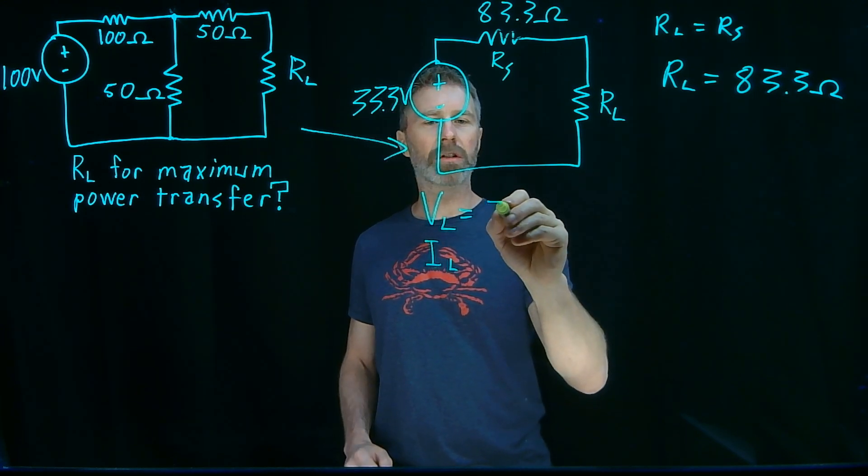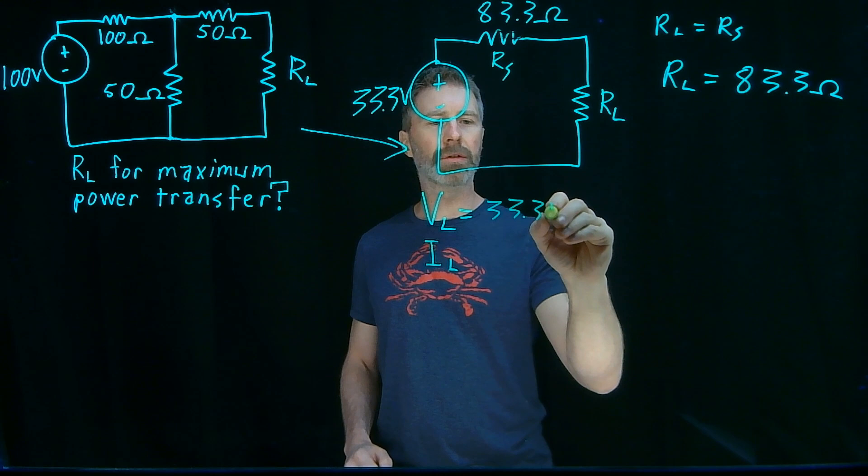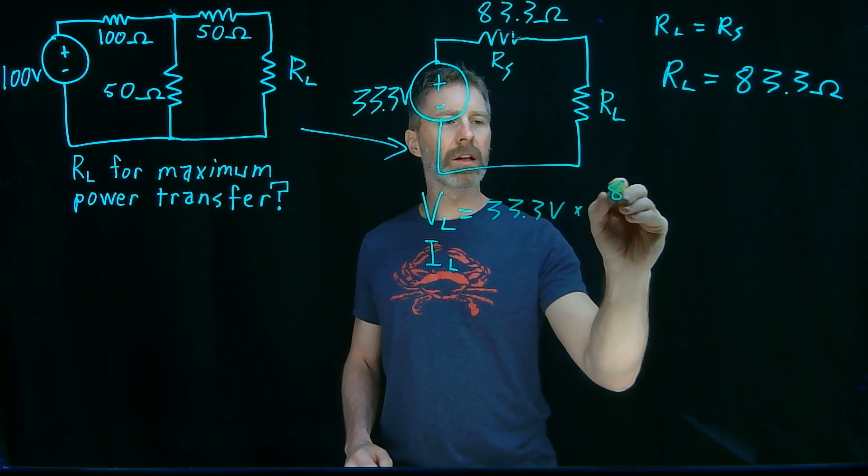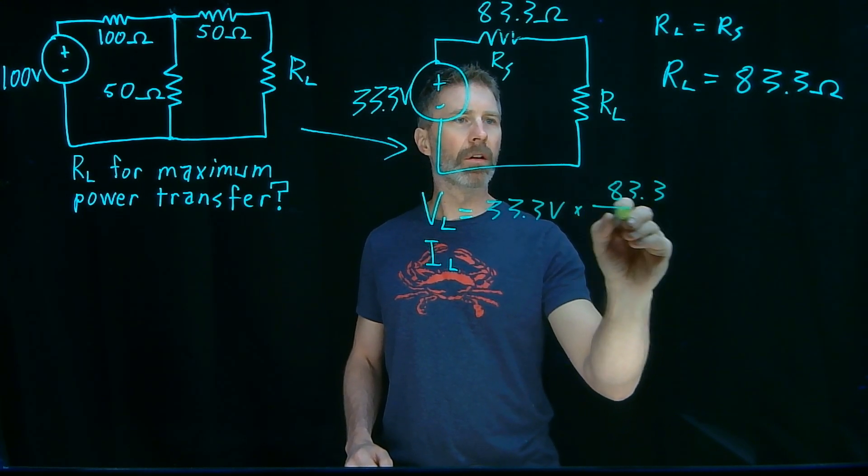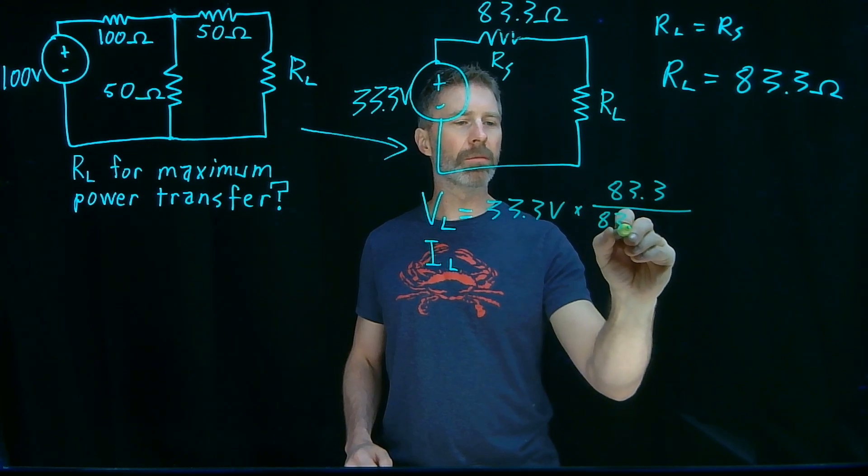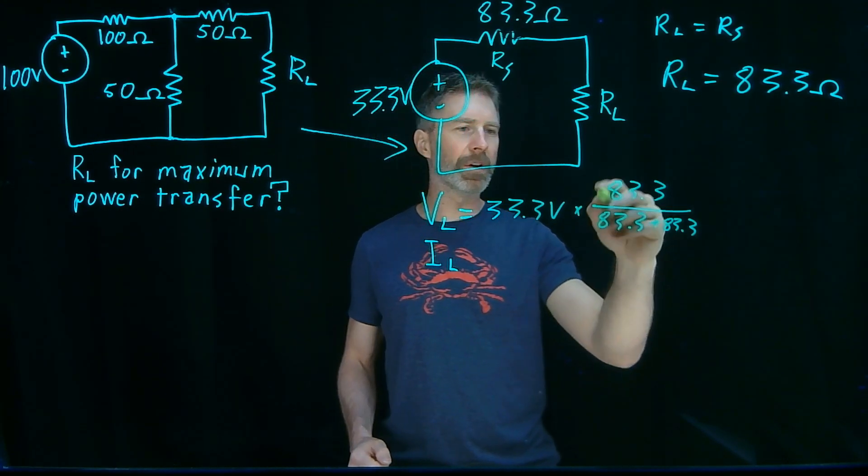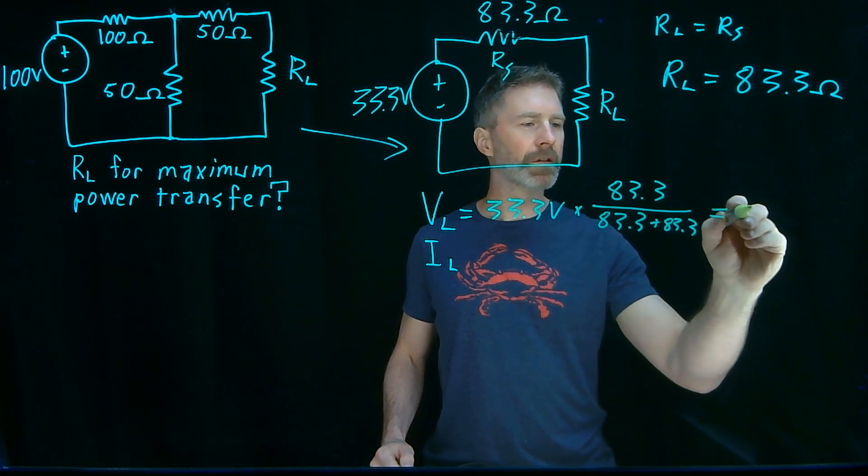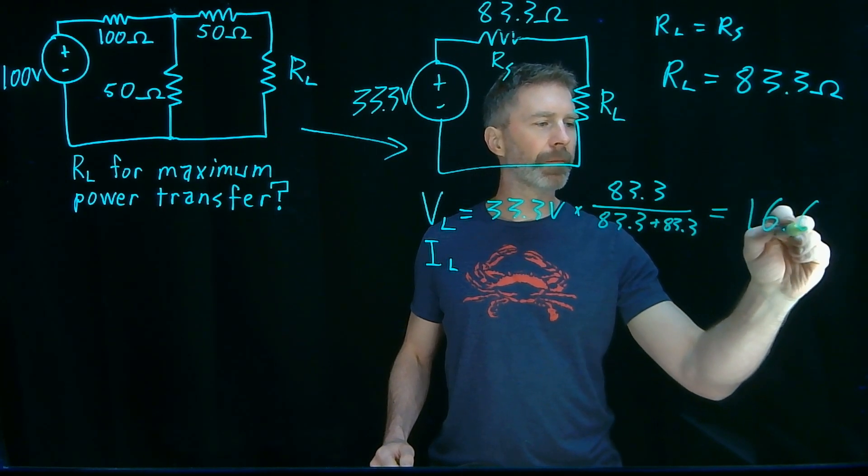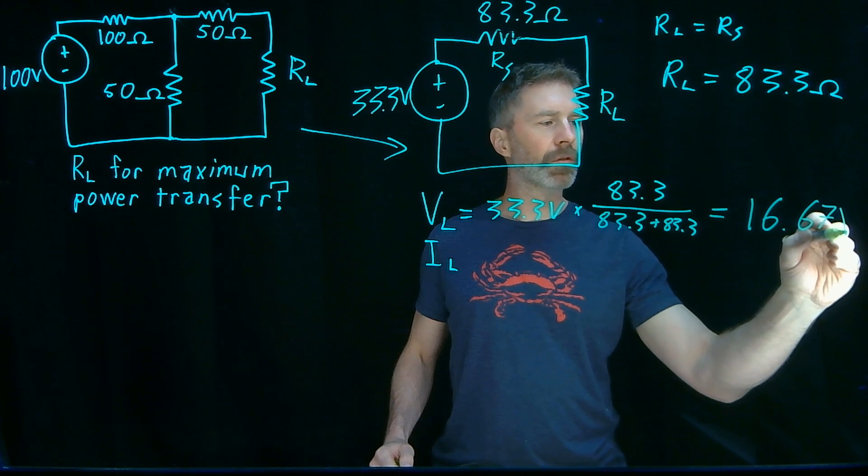Well, simple calculations for the voltage. 33.3 volts times 83.3 over 83.3 plus 83.3. Well, I know that ratio is 0.5, so this works out to 16.67 volts.